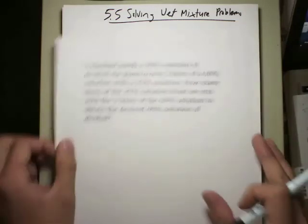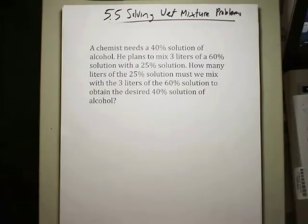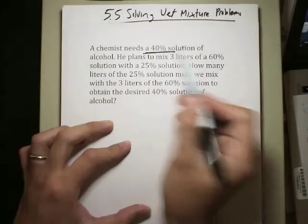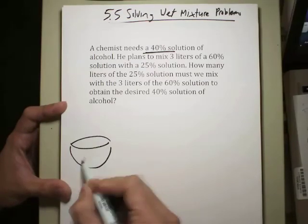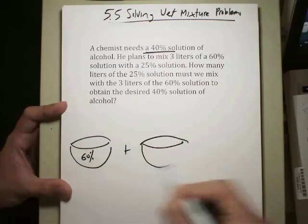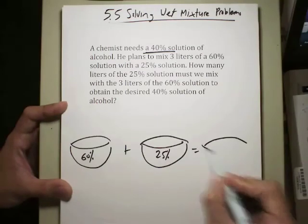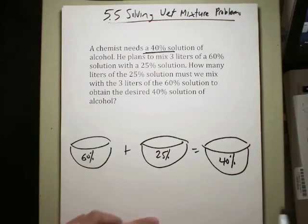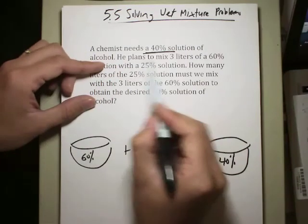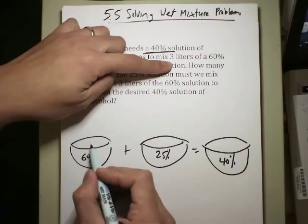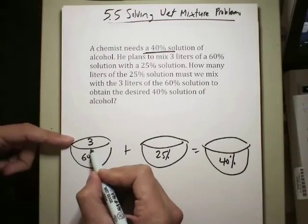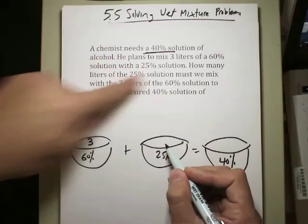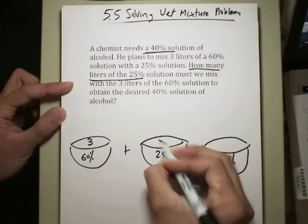Moving on to our next example, very similar to the one we had before. It says that a chemist needs a 40% solution of alcohol, so this is the final result. I want that as my final bowl. He plans to mix 3 liters of 60% solution with 25% solution, so at least I know where to start off. I have two bowls. One is 60% solution. The other one is a 25% solution. And I want that final result when I mix these two together to be a 40% solution. For this particular example, notice that he plans to mix 3 liters, so I know exactly what I need to go into this bowl: 3 liters. This one I know exactly I'm going to mix in 3 liters of 60% with a 25% solution. However, for the 25%, I don't know how many I need. So in that case, I just represent it using a variable.